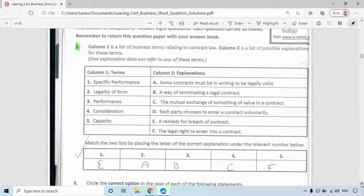Specific performance is E, which is a remedy for a breach of contract. Legality of form is A, stating that some contracts must be in writing to be legally valid. Performance is B, which is a way of terminating a legal contract. Consideration is C, the mutual exchange of something of value in a contract. And Capacity is F, which is the legal right to enter into a contract.